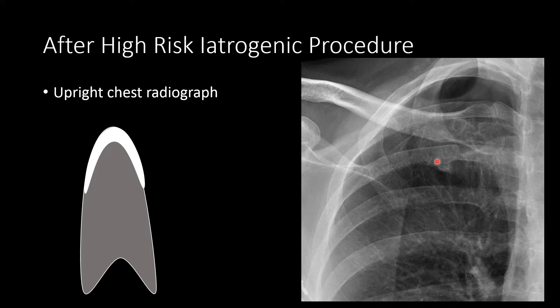If we blow up this particular patient, we can see the pneumothorax as indicated by this pleural line that extends across multiple ribs and rib interspaces. We can see the lucency with absent lung markings. The yellow line highlights that pleural line. The yellow arrows show the pleural line in the rib interspaces, and the blue arrows show the pleural line crossing the ribs.